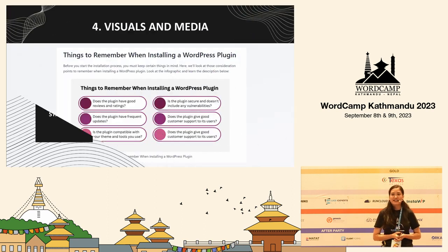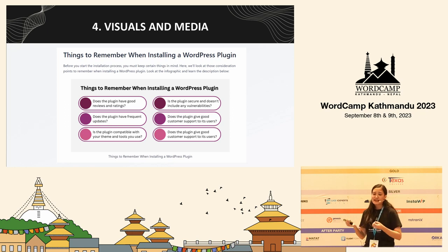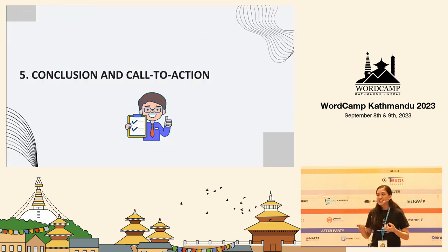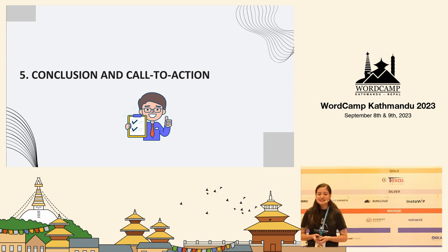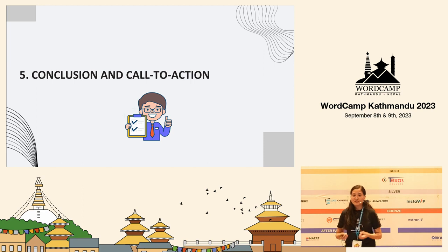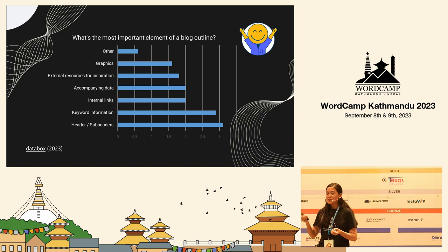After that, you can find the different visuals and media to include in your article and mention them in your outline. For example, they can be images, videos, or infographics. Here is an example of an infographic on one of the headings: 'Things to Remember When Installing a WordPress Blog.' With that, it comes to the last step: conclusion and call to action. In the conclusion, you summarize your article, and in the call to action, you let users take an action — such as liking, sharing, or commenting on your article, or directing people to other blogs on your website. This completes all the main important elements you have to include in your blog outline.